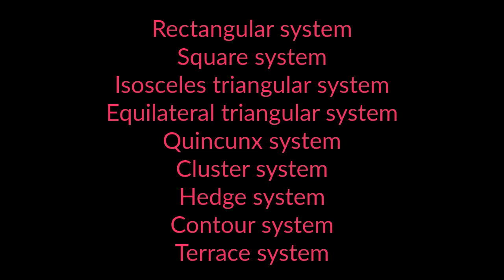The common planting systems followed in an orchard or plantation are: rectangular system, square system, isosceles triangular system, equilateral triangular system, quincunx system, cluster system, hedge system, contour system, and terrace system.